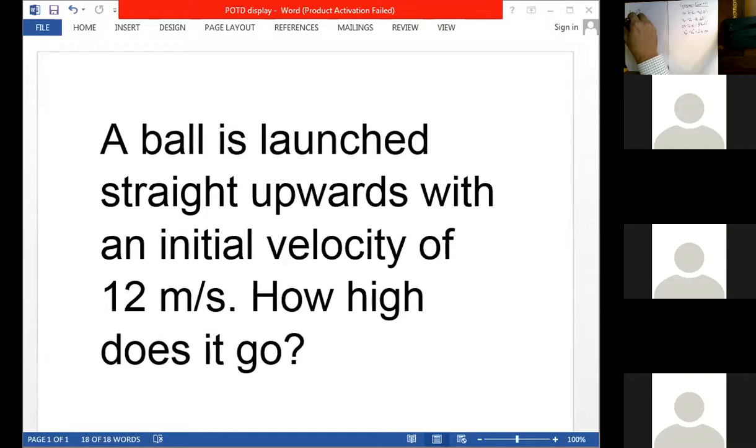So it's in free fall so we know the ay in this case because it's vertical is 9.8 meters per second squared. Okay, so we got the only number that we see, 12 meters per second is our initial velocity. We know it's in free fall so we've got acceleration.